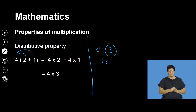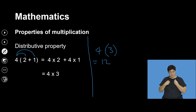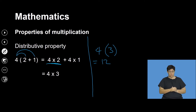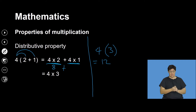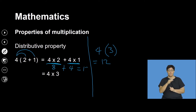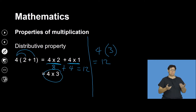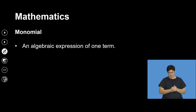If I want to get the same answer using the distributive property, I say 4 multiplied by 2, which gives the first part, and then 4 multiplied by 1, which gives the second part. 4 times 2 is 8, plus 4 times 1 is 4, which gives 12. So the distributive property gives the same result as working out the bracket first.